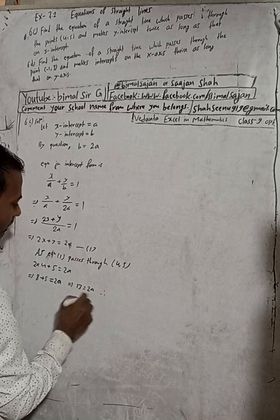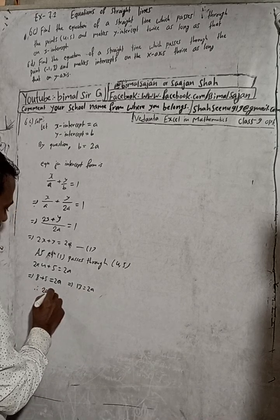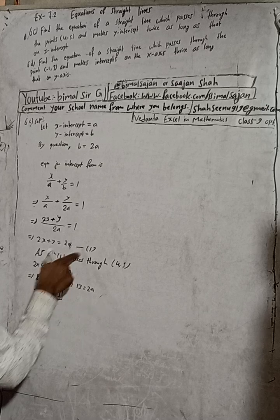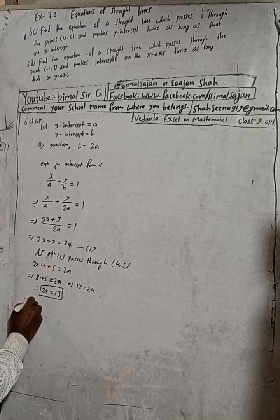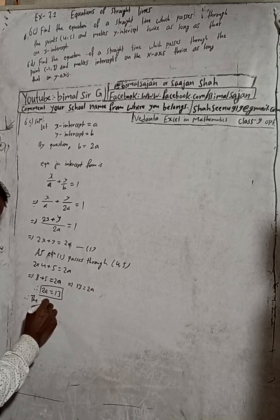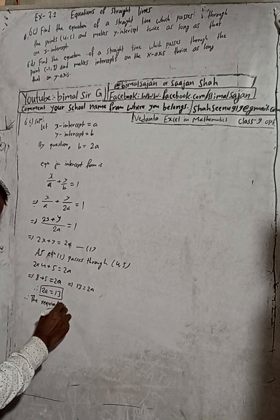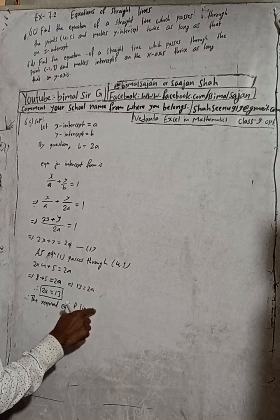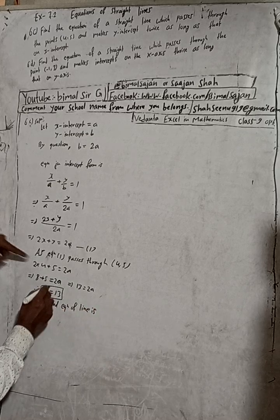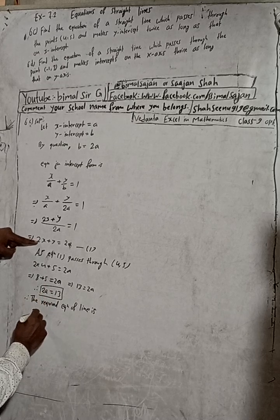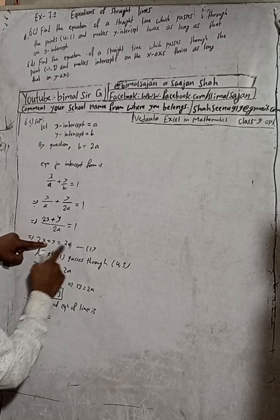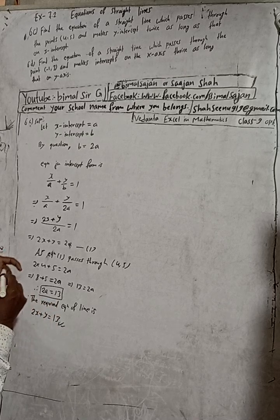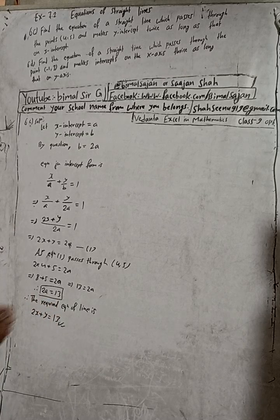Therefore 2a is equal to 13. Now put this 2a value, 13, in the equation. Therefore, the required equation of line is where this is the equation 2x plus y is equal to 2a. This is our required equation: 2x plus y is equal to 13.